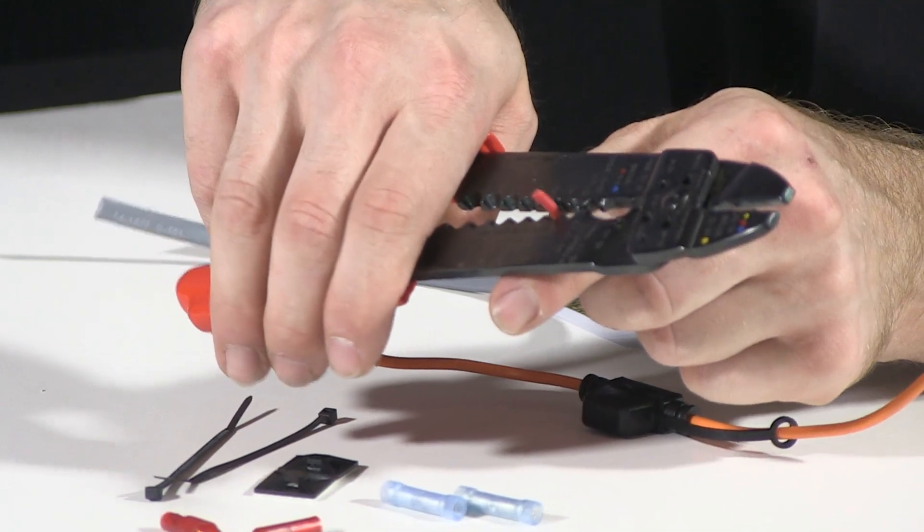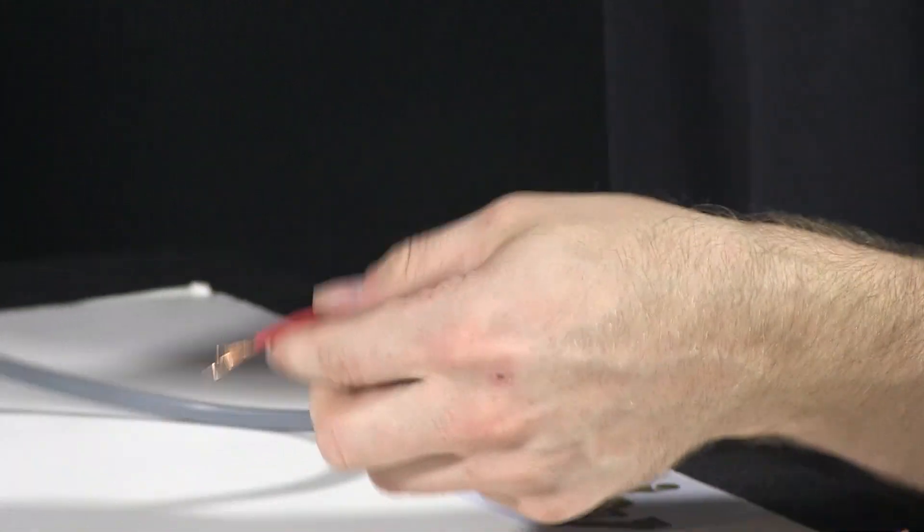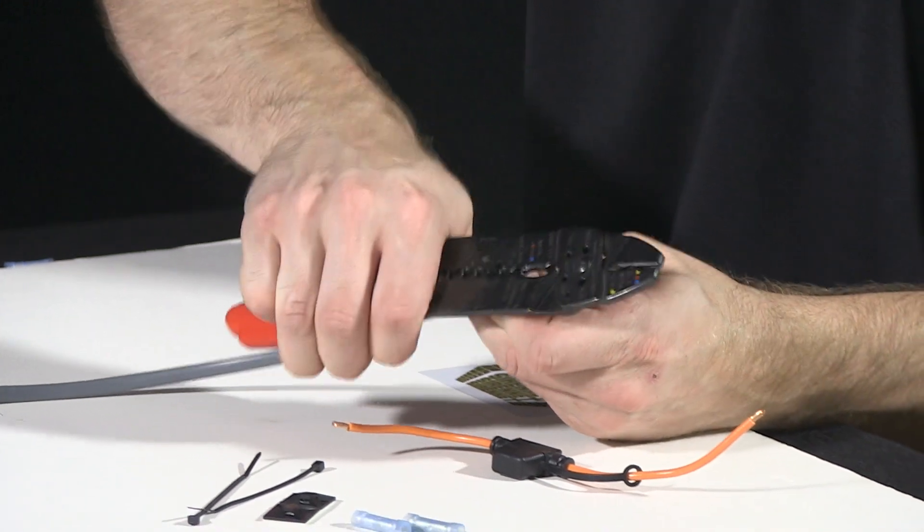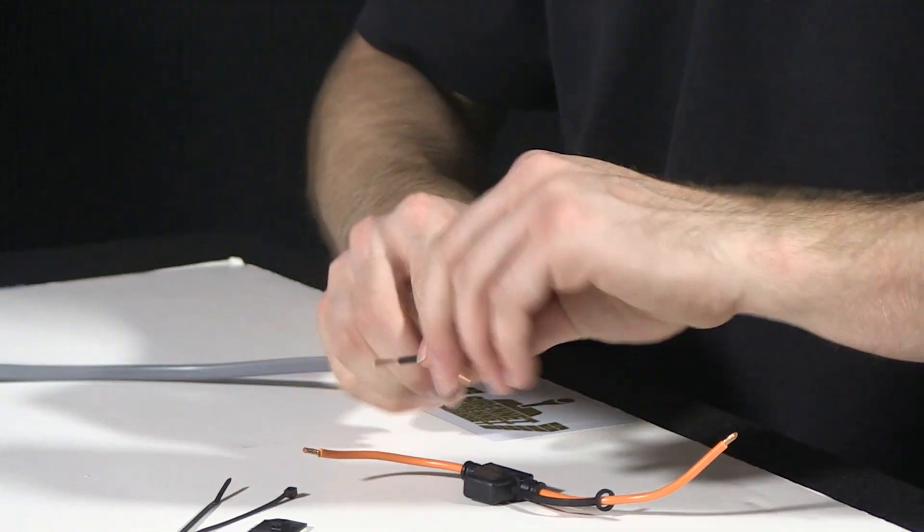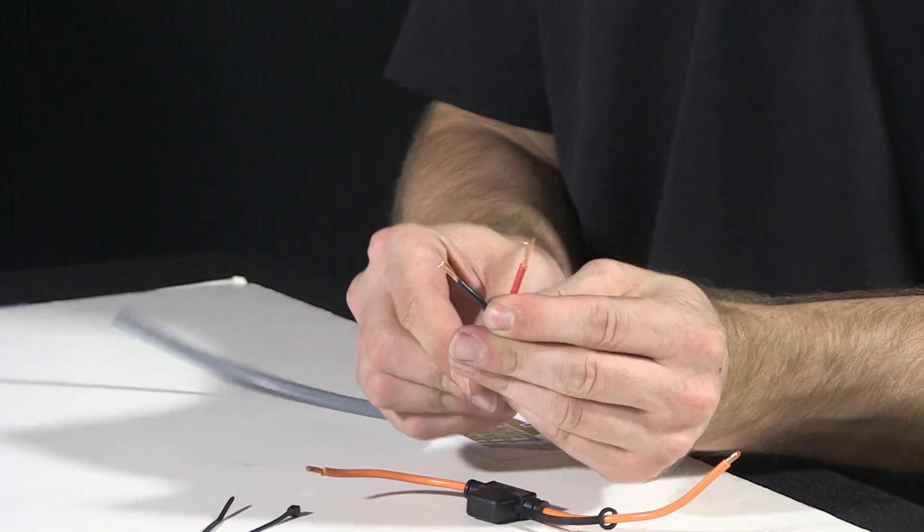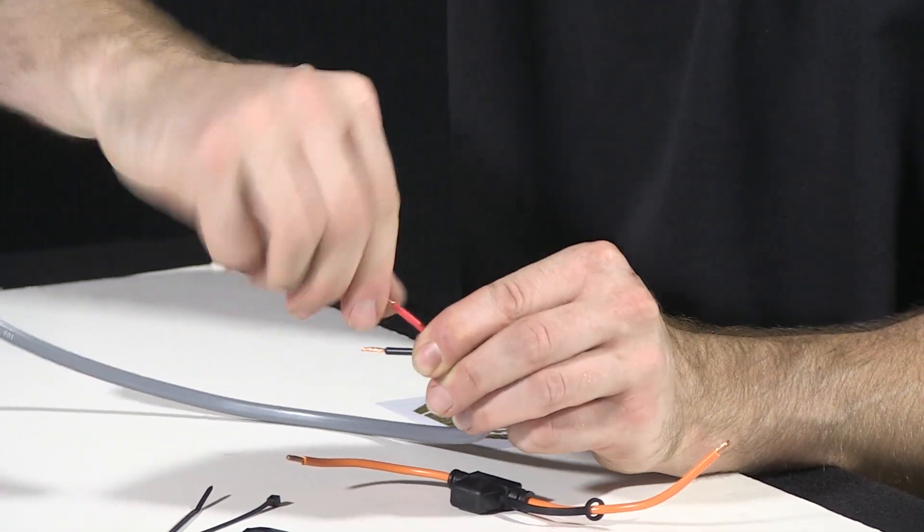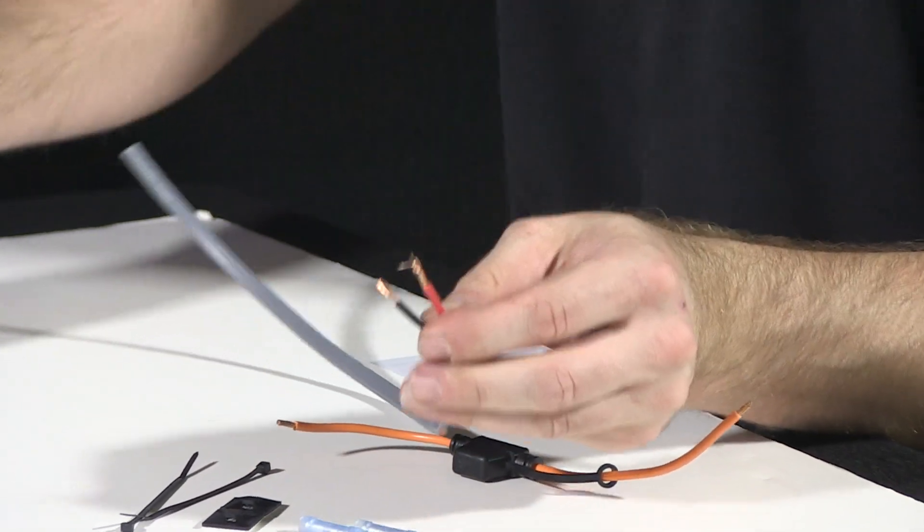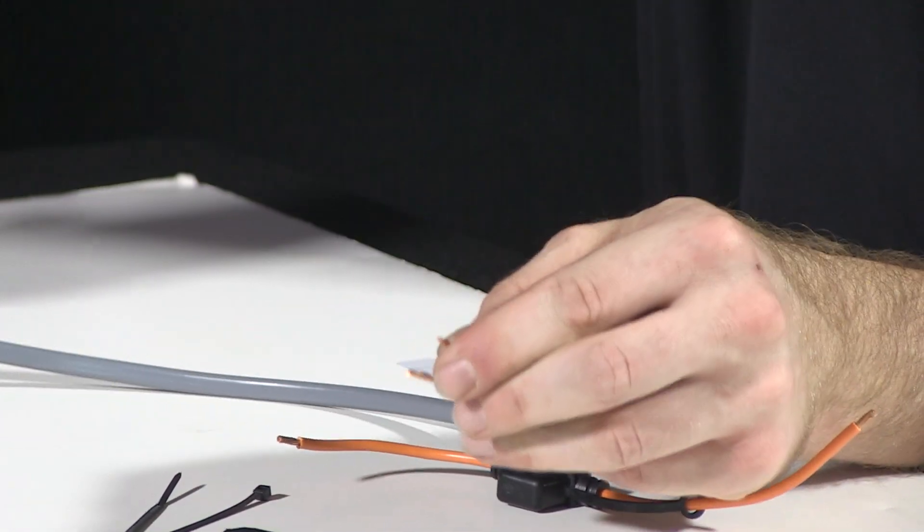I'm going to go ahead and strip the ends here. With your wiring it's always a nice idea to give it a little twist on the end just to get all the strands nice and tight. We'll just snip off this little bit of extra wiring that we aren't going to need.